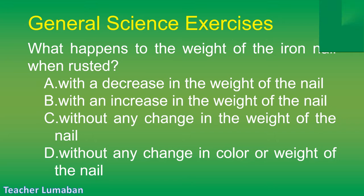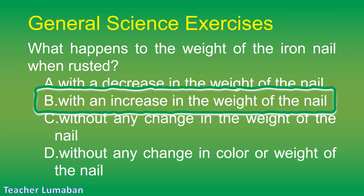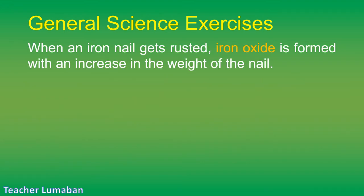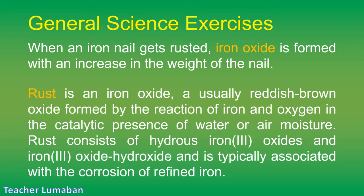The correct answer is Letter B: increase in the weight of the nail. When an iron nail gets rusted, iron oxide is formed with an increase in the weight of the nail. Rust is an iron oxide — a usually reddish-brown oxide formed by the reaction of iron and oxygen in the catalytic presence of water or air moisture. Rust consists of hydrous iron(III) oxides and iron(III) oxide-hydroxide, typically associated with the corrosion of refined iron.